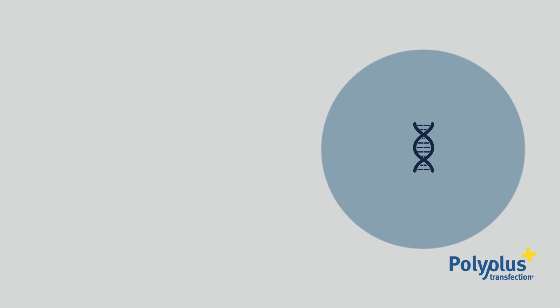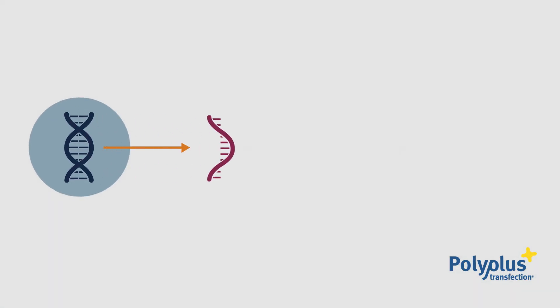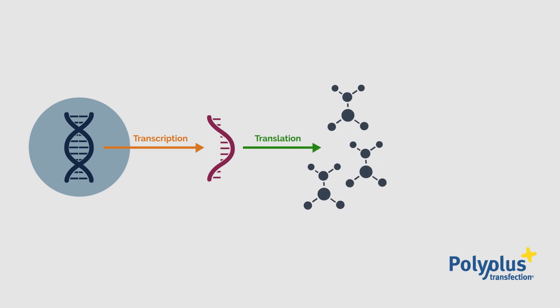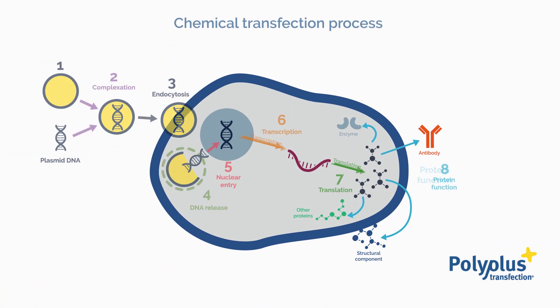The exogenous DNA in the nucleus is actively transcribed into mRNA, and translated into the protein it encodes for via the same protein expression machinery that the cell uses to produce the proteins it needs to function properly. It is therefore important to keep the DNA amount as low as possible to not overcharge the cell's machinery.